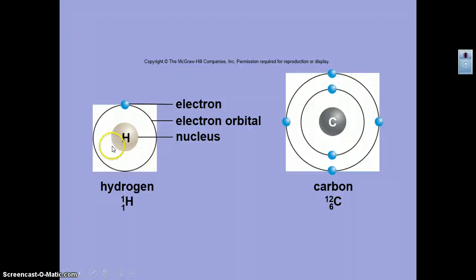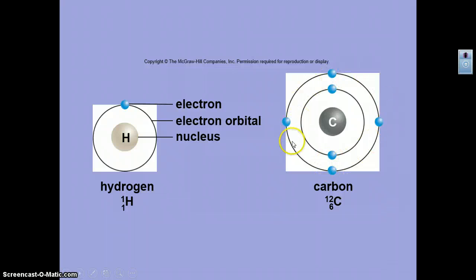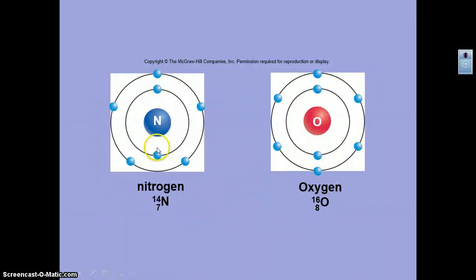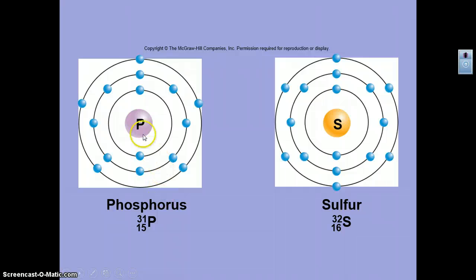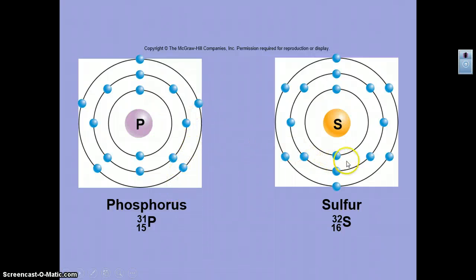Here are examples of electron configurations. Hydrogen has one proton in the nucleus and one electron on the outside. Carbon has 6 protons and 6 neutrons in the center, with 2 electrons in the first shell and 4 in the second. Nitrogen has 2 then 5 in the outer shell; oxygen has 2 then 6. Phosphorus has 2, then 8 in the next orbital, then the remaining 5 in the last shell. Sulfur has 2, then 8, then 6 in the outermost orbital.